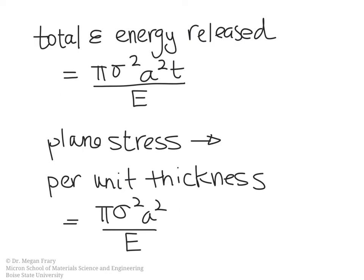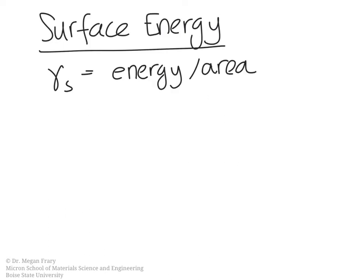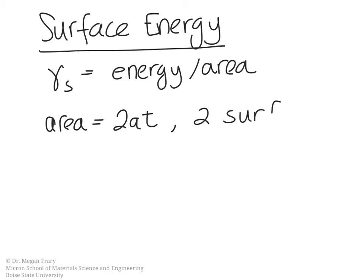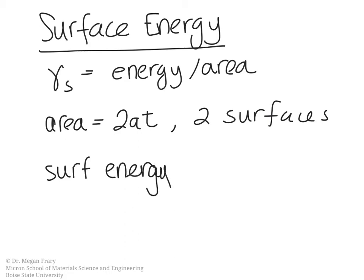That elastic energy is compensated in the growth of a new crack by the creation of two new surfaces. We consider the surface energy using gamma_s, which is the energy per unit area of the surface. The area of the crack is 2a times t, but we have two surfaces, so in total the surface energy of the crack is equal to 4 times a times t times gamma_s. Per unit thickness, this gives us 4a gamma_s.